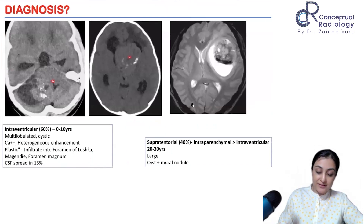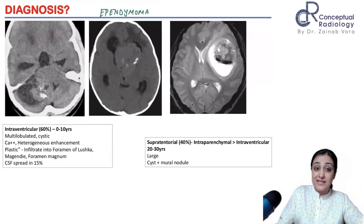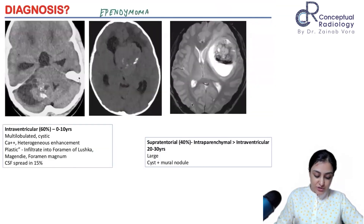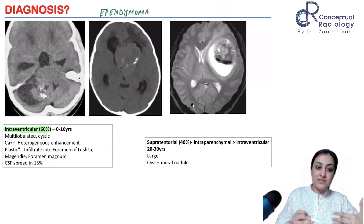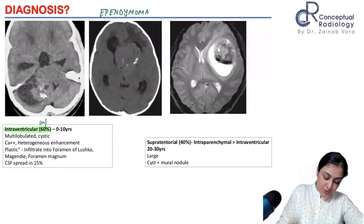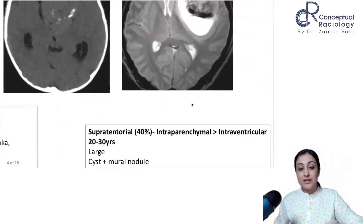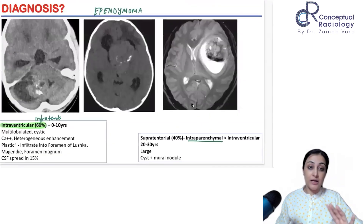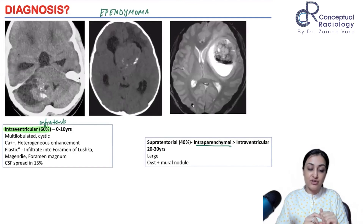Ependymomas arise from the ependymal lining of a ventricle. 60% are intraventricular and 60% are infratentorial, making infratentorial far more common than supratentorial. The supratentorial 40% more commonly show intraparenchymal spread rather than intraventricular. Overall, the most common type of ependymoma is infratentorial intraventricular.